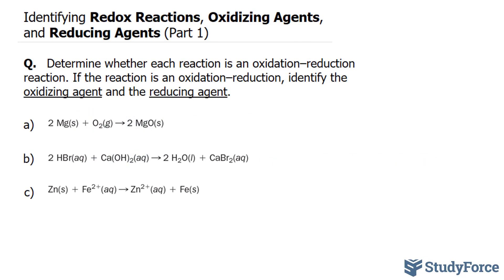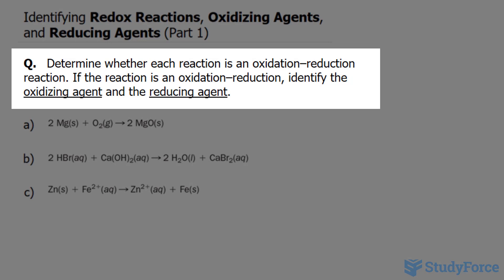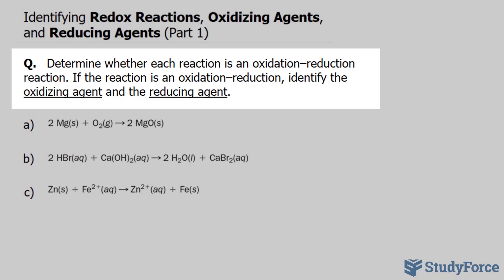In this lesson, I'll show you three examples on how to identify redox reactions, oxidizing agents, and reducing agents. This is part one. The question reads: determine whether each reaction is an oxidation-reduction reaction. If the reaction is an oxidation-reduction, identify the oxidizing agent and the reducing agent.